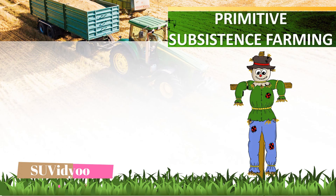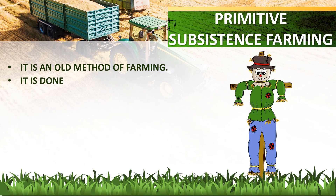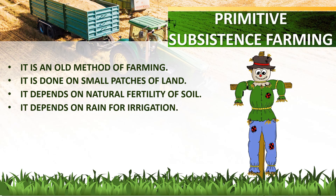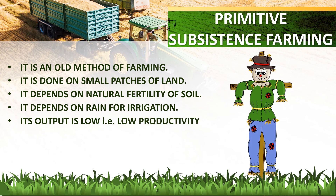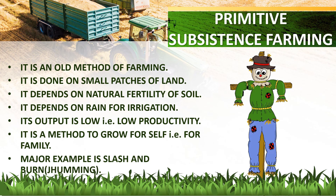Primitive subsistence farming is an old method of farming. It is done on small patches of land. It depends on the natural fertility of soil and on rain for irrigation. Its output is low, i.e., low productivity. It is a method to grow for self, i.e., for family. The major example of primitive subsistence farming is slash and burn, also known as Jhumming.